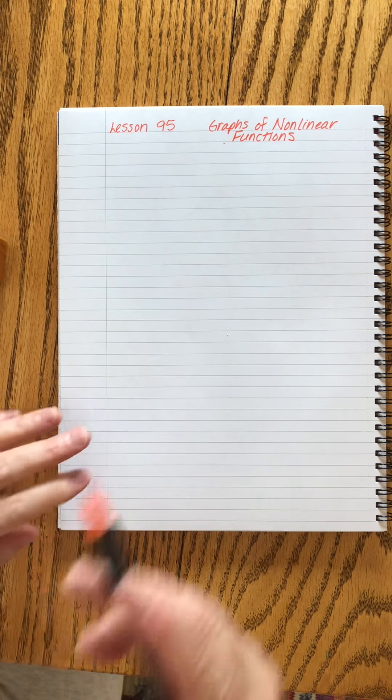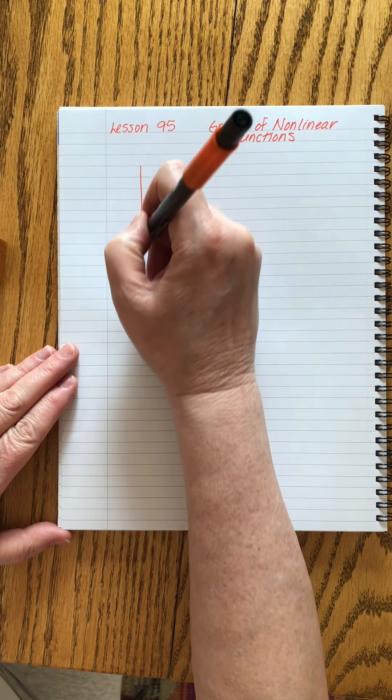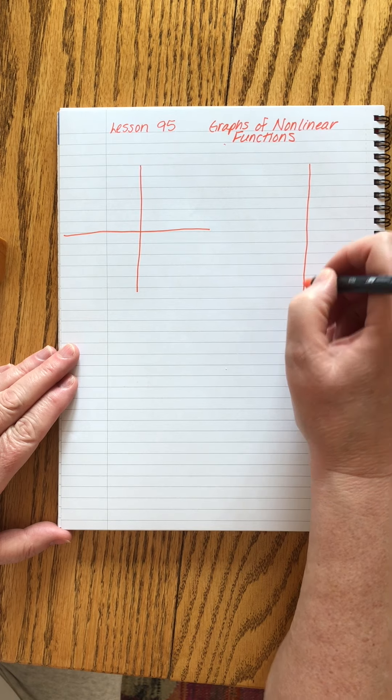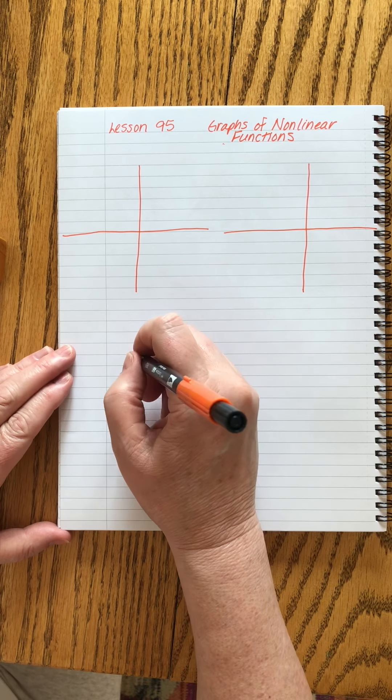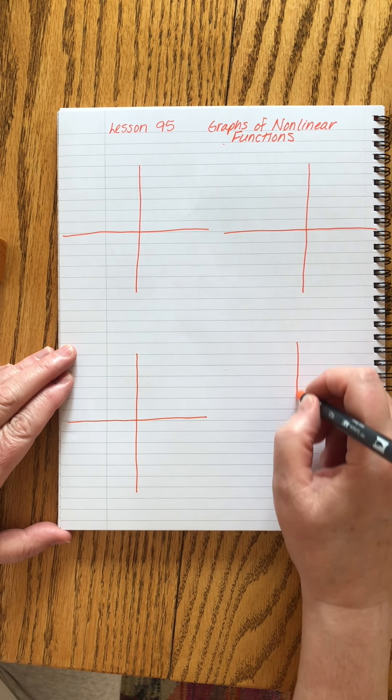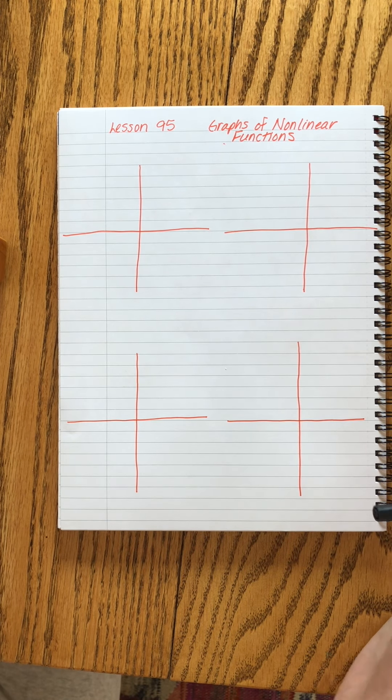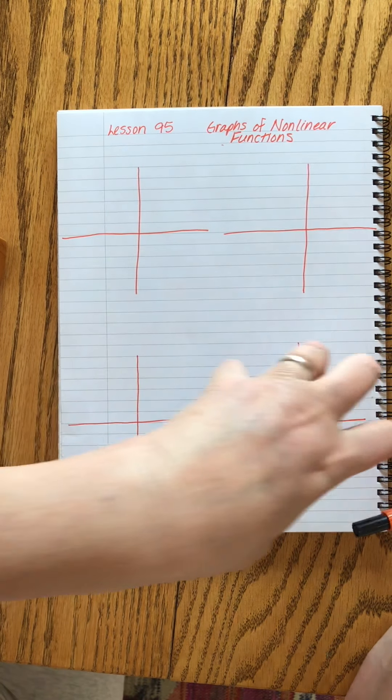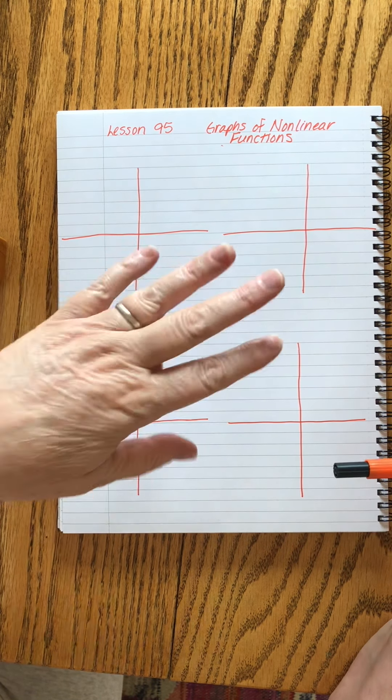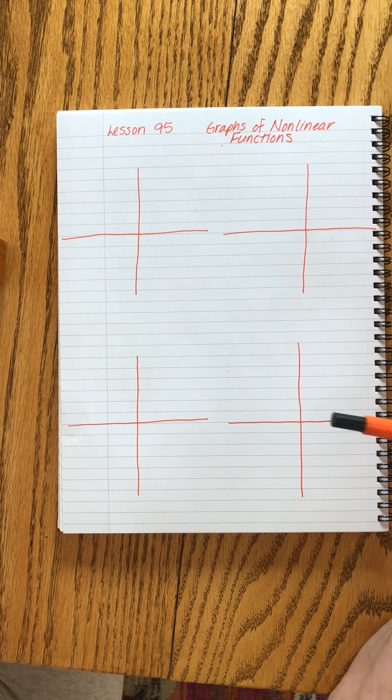So we're going to look at four different types. So what I want you to do in your paper, imagine your paper as a whole, and we're going to draw four with some space in between them. Underneath them, I guess I should say, so that we can put some labels there. Ready? Like so.